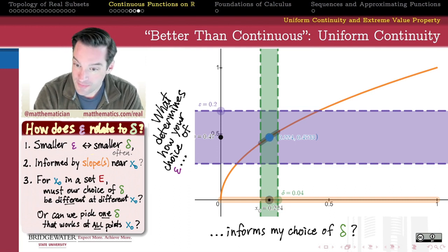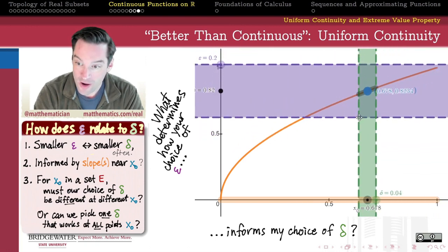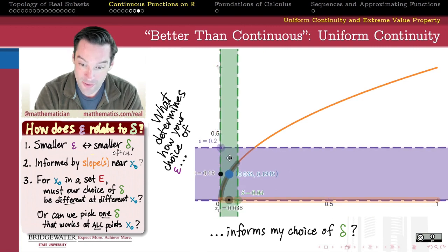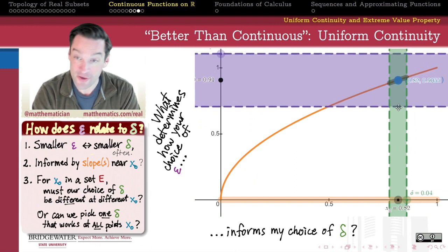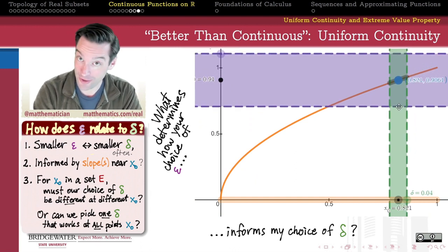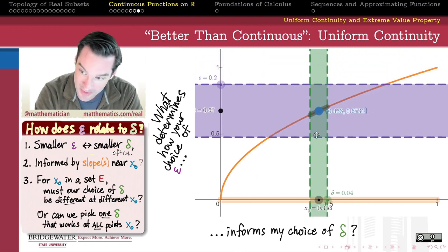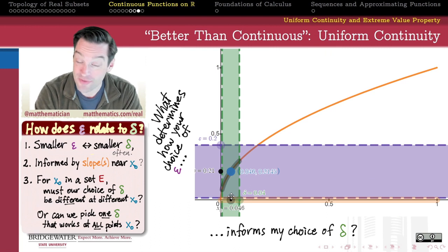If you pick an epsilon for me, I can pick a delta such that anywhere in this domain, all of the x values that are delta close to x0 are going to have y values that are epsilon close to f of x0. And again, where this graph is kind of shallow, where the slopes are not that large in absolute value, that seems like we've got some breathing space.